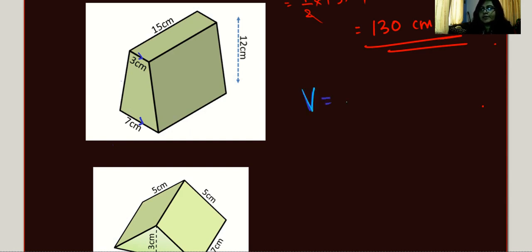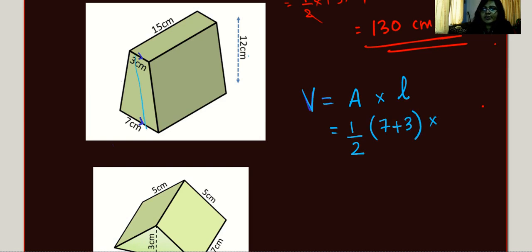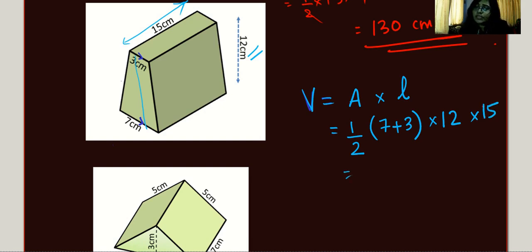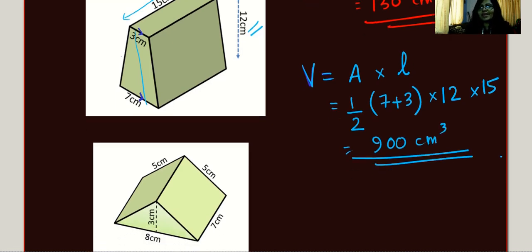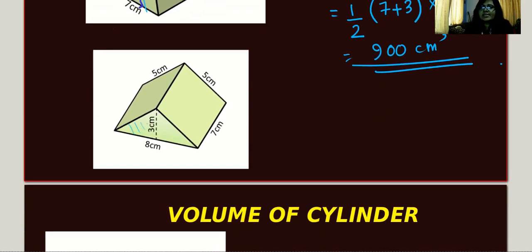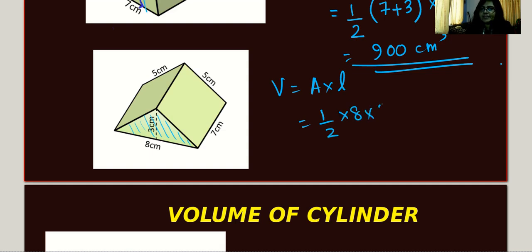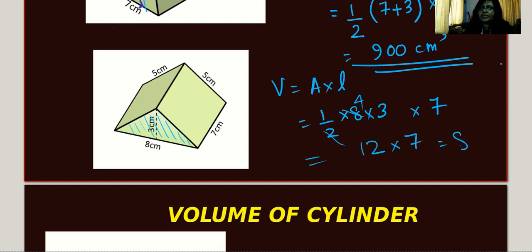For the trapezium prism, volume equals area of trapezium times length. Area of trapezium is half times the sum of parallel sides times the height between them. The parallel sides are 7 and 3, so 7 plus 3; the distance between them is 12; and the length is 15. So half times 10 times 12 times 15 gives 5 times 12 times 15, which equals 900 cm³. For the last prism example — a triangular prism — volume is half times 8 times 3, then times 7, giving 12 times 7 equals 84 cm³.